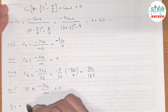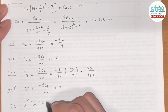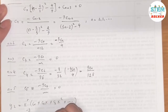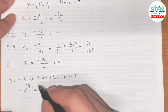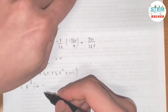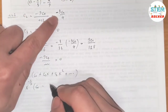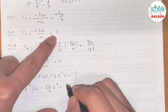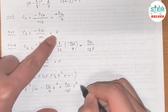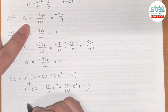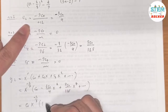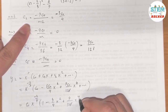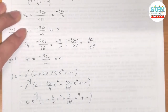So y2 equals x to the −2/3 times c0 [with c1=0, c2 = −3c0/4... wait, c2 = 3c0/4]. After factoring out c0: y2 = c0 · x^(−2/3) · [1 − (3/4)x² + (9/128)x⁴ + ...].